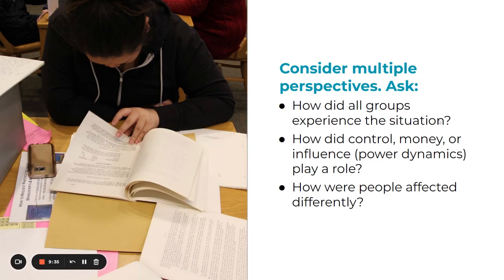So how do you approach these topics? Looking at multiple perspectives — that's how you do it. How did all groups experience a situation? If you're talking about the Transcontinental Railroad, how did the tribes react to the railroad bringing more people through their traditional lands? How did control, money, or influence play a role, and how were people affected differently?